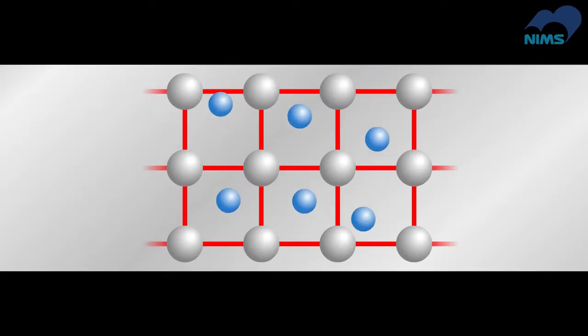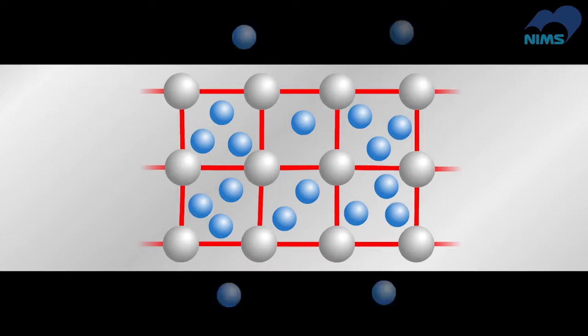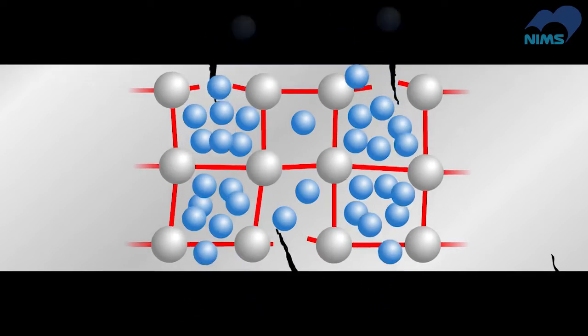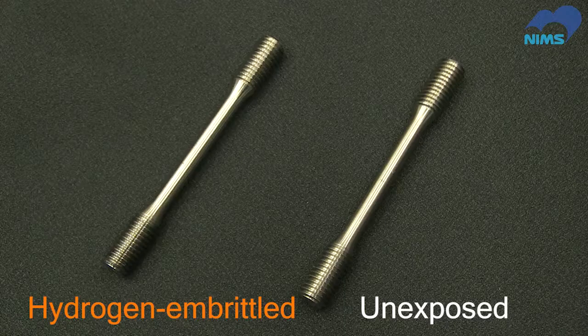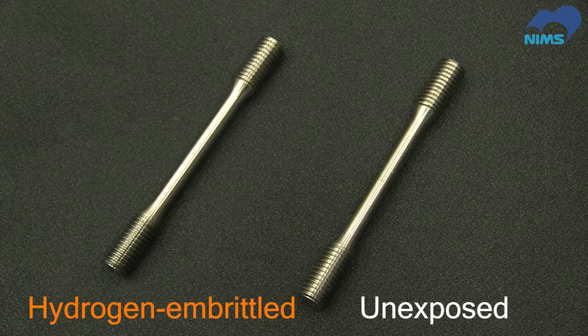Hydrogen is a very small element. These atoms permeate metal, making it more brittle. It's called hydrogen embrittlement. It cannot be detected visually, unlike rust or metal oxidation.